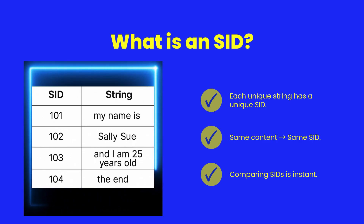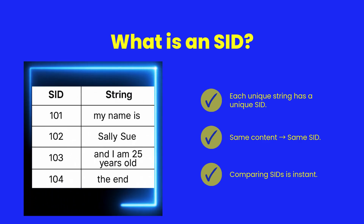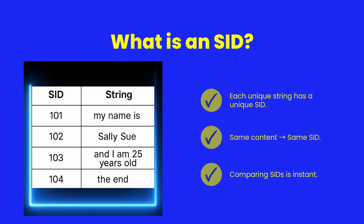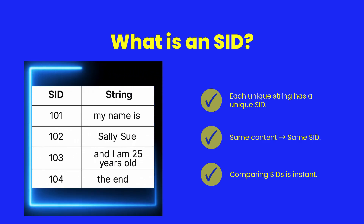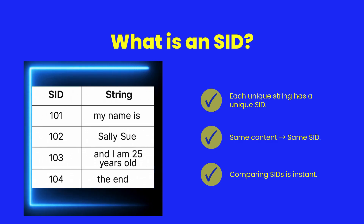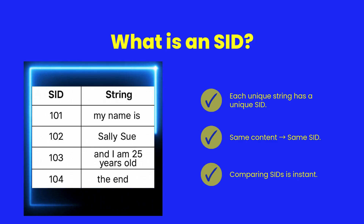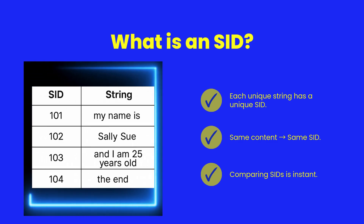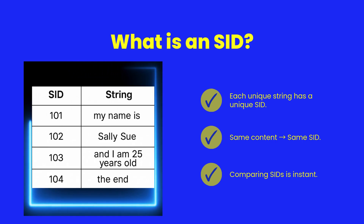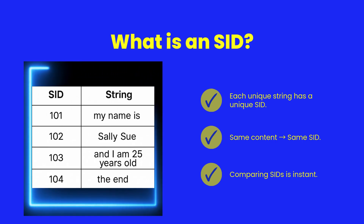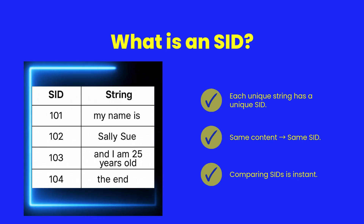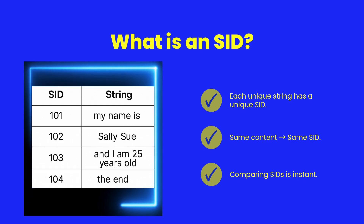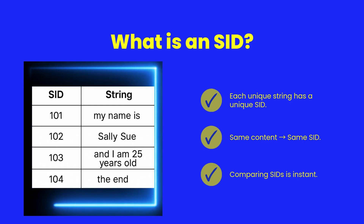Every string in ShearPower gets a unique identifier called an SID. When two variables reference the same string content, SPVM doesn't compare their characters — it just checks their SIDs. If they match, the input hasn't changed. That's a massive win for speed.